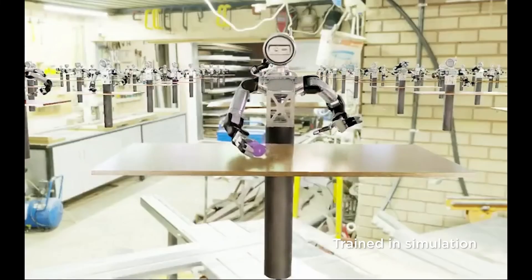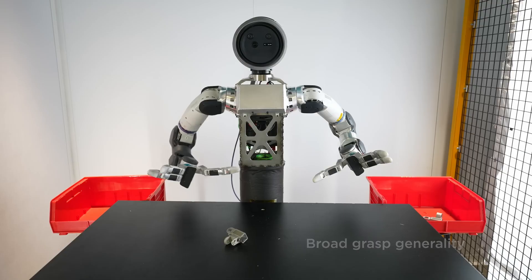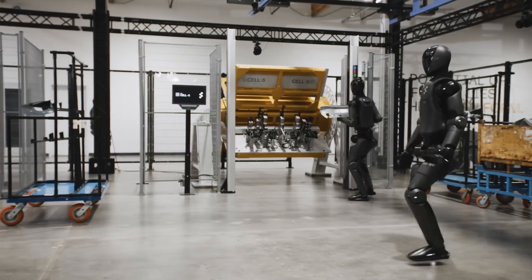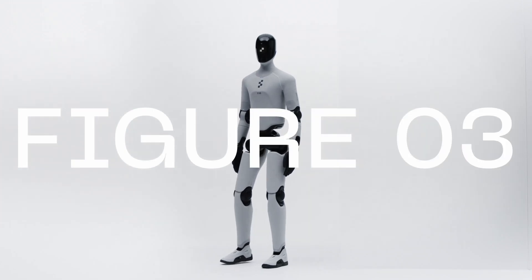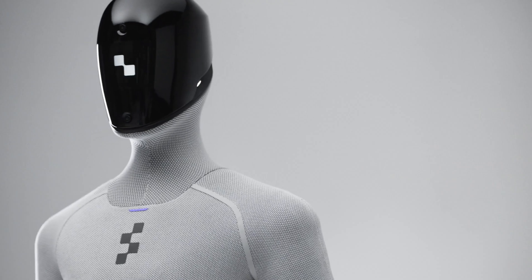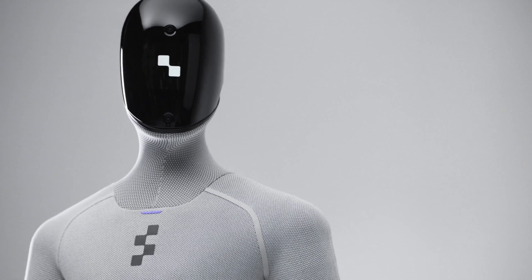Now jump to Figure, because while Boston Dynamics is perfecting motion and grip, Figure is building for scale. On October 9th, they unveiled Figure 0-3, their third generation humanoid, redesigned from the ground up to serve three goals: power, fit into homes, and mass-produce worldwide.